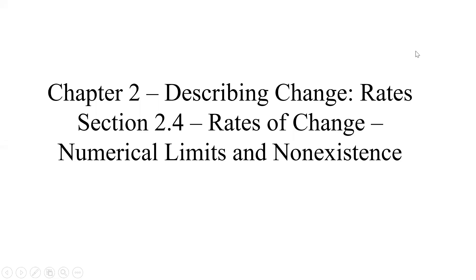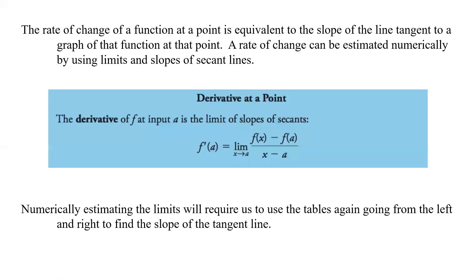We're in Chapter 2 on Describing Change, Rates. This is Section 2.4 on Rates of Change, and we're looking at numerical limits and non-existence. The rate of change of a function at a point is equivalent to the slope of the line that is tangent to the graph of that function at that point.